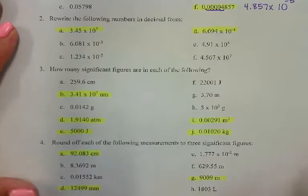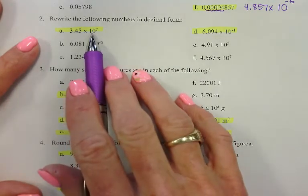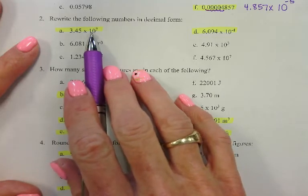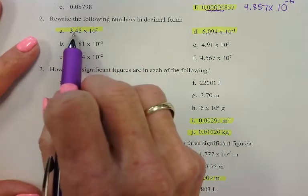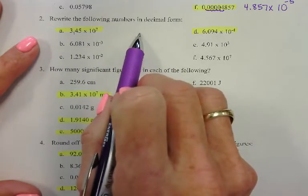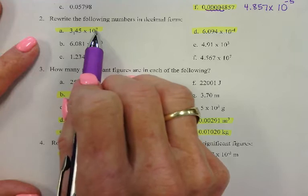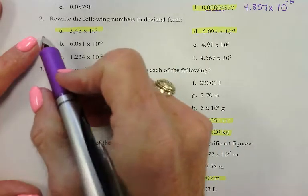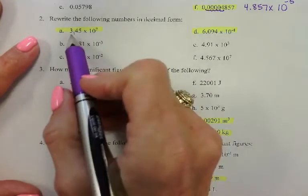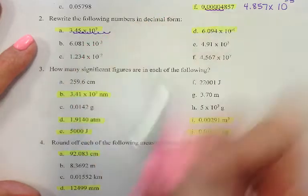Okay, number two: rewrite the following numbers in decimal form. So I need to take them out of scientific notation and put them into standard notation. So 3.45 times 10 to the seventh — I need to take that decimal point and move it seven places to the right. How do I know to move to the right? Because 7 is positive, and a positive exponent means the number is going to be greater than 1. So let's start moving it seven places: 1, 2, 3, 4, 5, 6, 7.